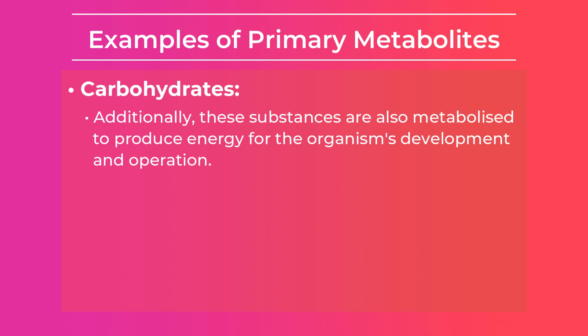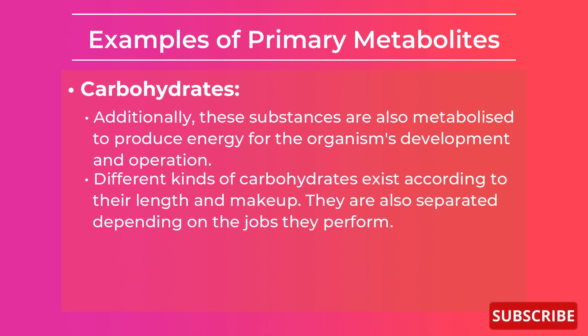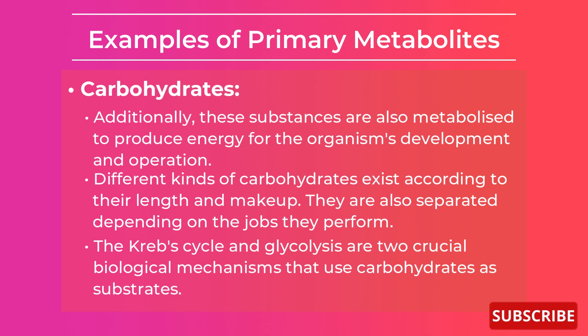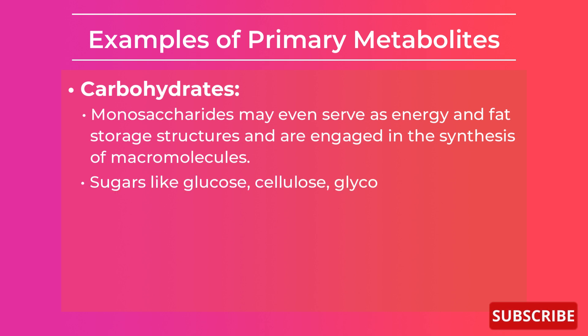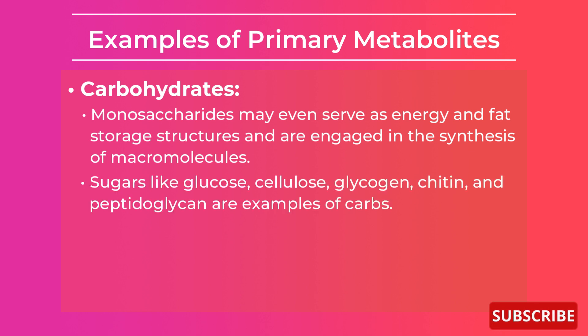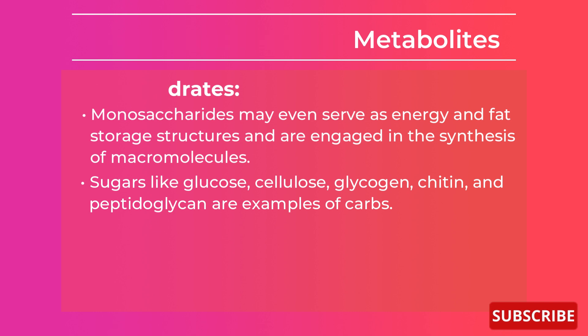Different kinds of carbohydrates exist according to their length and makeup, and they are also separated depending on the jobs they perform. The Krebs cycle and glycolysis are two crucial biological mechanisms that use carbohydrates as substrate. Monosaccharides may serve as energy and fat storage structures and are engaged in the synthesis of macromolecules. Sugars like glucose, cellulose, glycogen, chitin, and peptidoglycan are examples of carbohydrates.